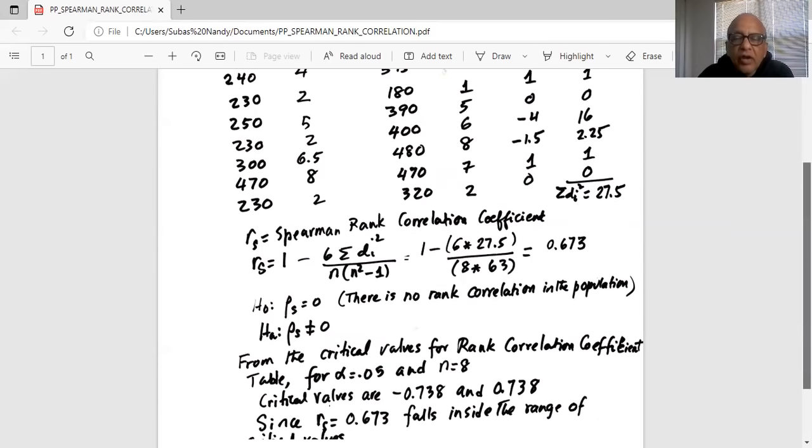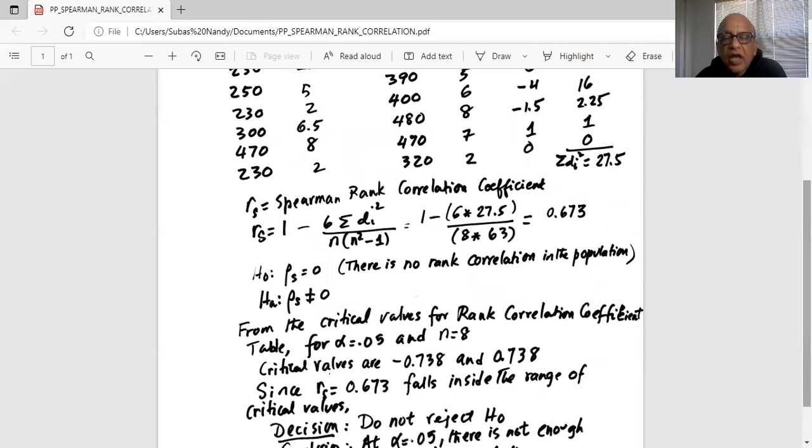Now from the critical values for rank correlation coefficient table for alpha equal to 0.05 and n equal to 8 are minus 0.738 and 0.738 because this is a two-tailed test. Remember our null is rho S equal to 0, alternate rho S not equal to 0. Rho is a Greek symbol, so it indicates population correlation coefficient. And because it is a two-tailed test, we have two critical values, one is negative and one is positive.